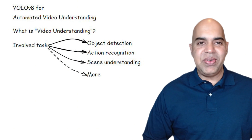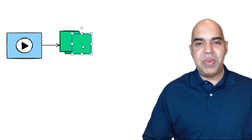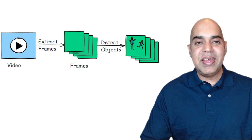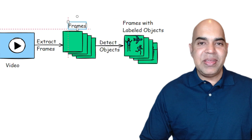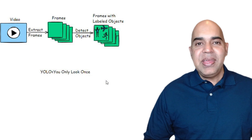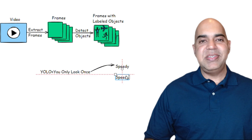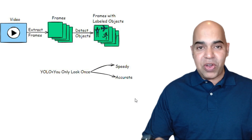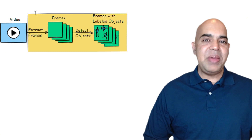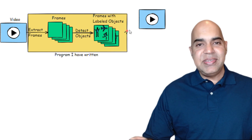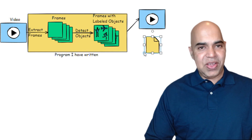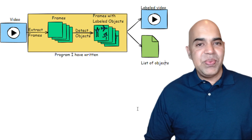We will extract frames from a video and for each frame use YOLO v8 to detect objects and label them. YOLO means You Only Look Once — it is a state-of-the-art object detection system. YOLO version 8 is renowned for its speed and accuracy, making it suitable for various video understanding tasks. Given an input video, the program I have written will output two files: the same video but with bounding boxes around objects labeling them, and a text file containing which frame has what object.